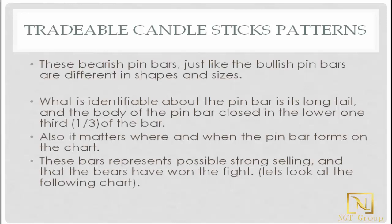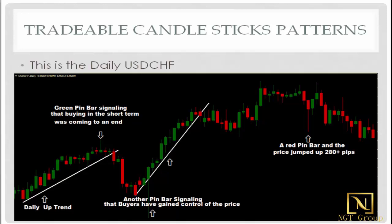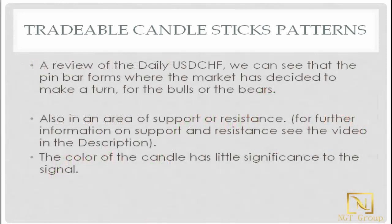Let's take a look at this next chart. A green pin bar signaling that buying in the short term was coming to an end. As you can see, the topping tail bar came up pretty strong, cut and held, pulled back, closed lower, and a substantial down move followed. Then a bullish pin bar, or bullish bottoming tail bar, came down and pushed right back up before it closed, signaling that bulls are coming into the market. A review of the daily USD Swiss shows that the pin bar forms where the market has decided to make a turn — for the bulls or the bears — also in any area of support or resistance. The color of the candle has little significance to the signal.